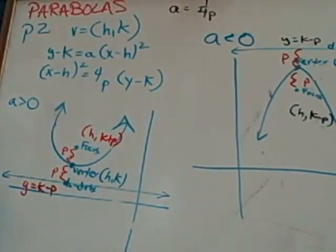And then where's my focus? It's going to be on the inside, and then my directrix is going to be a horizontal line. And we want to talk about where they're coming up with the formulas that they have above here. This distance here between vertex and directrix is p. This distance here is p.